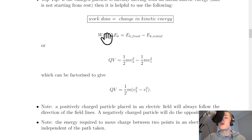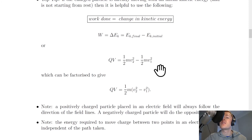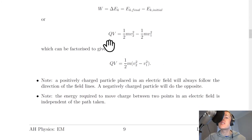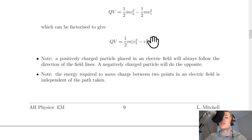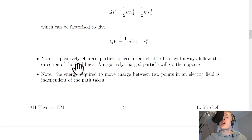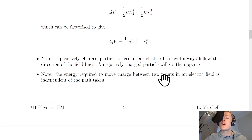We can say QV equals a half mV2 squared minus a half mV1 squared, where V2 is the final speed and V1 is the initial speed of the particle, using EK equals a half mV squared. We can factorise this to QV equals a half m times V2 squared minus V1 squared. Note that a positively charged particle placed in an electric field will always follow the direction of the field lines, while a negatively charged particle will do the opposite. Also note that the energy required to move charge between two points in an electric field is independent of the path taken.